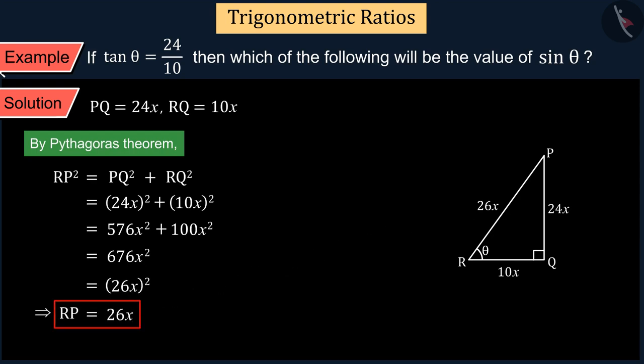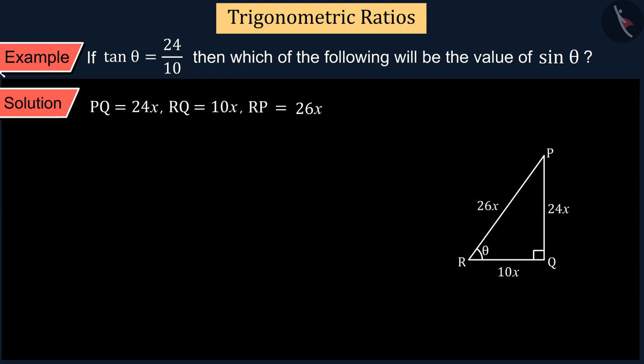RP = 26x units. We know that the value of sine of the angle is equal to the ratio of opposite side of the angle to the hypotenuse of the triangle, which gives us PQ upon RP.